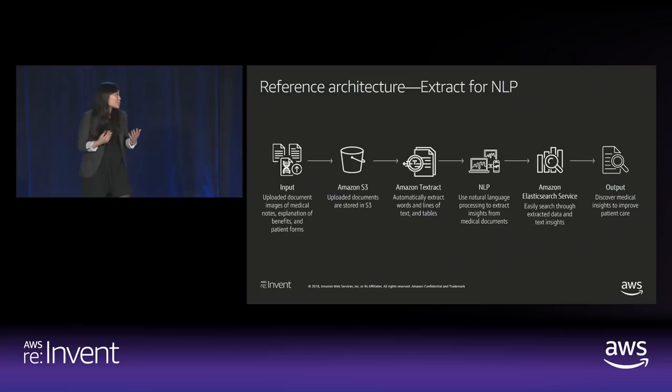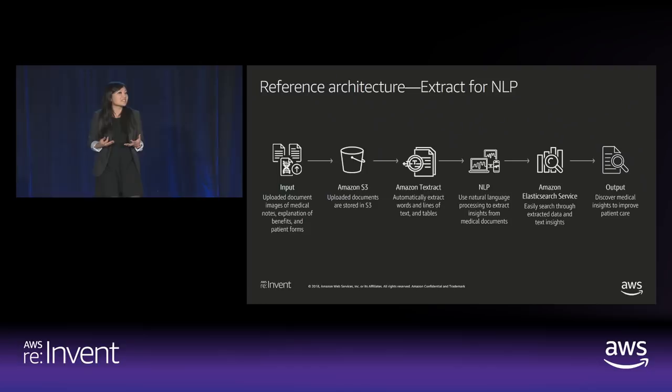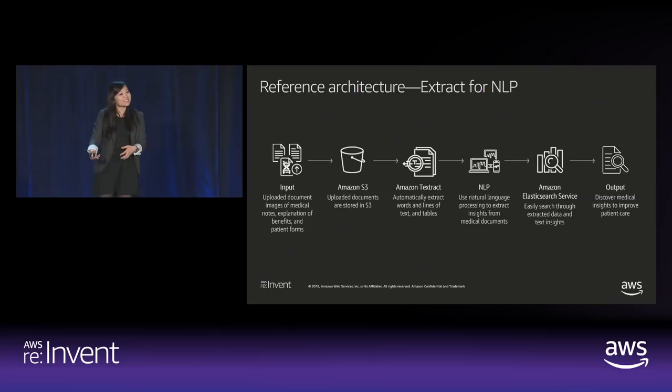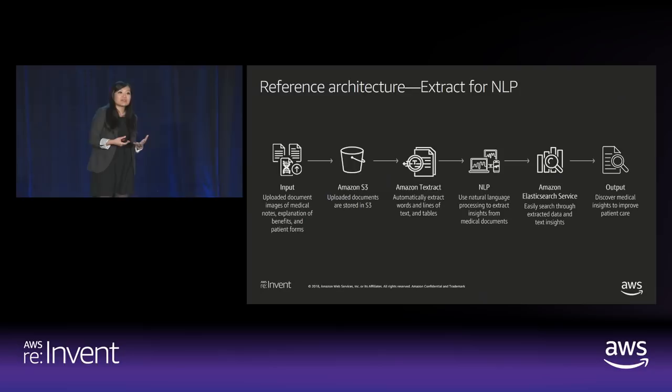I'm also super excited about the NLP use case. People have large document archives and don't know what to do with all that information. One possibility is NLP, but sending a bag of words to NLP is as useful as mixing up a text extraction and asking someone to make sense of it. With Amazon Textract you retain the structure as a human reader would read it, then send it to NLP to get insights you couldn't access before.